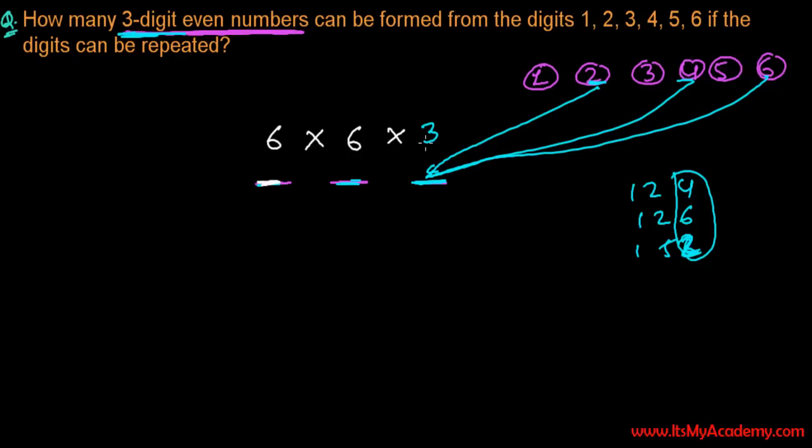Altogether, 6 times 6 is 36, and 36 times 3 is 108. So there are 108 numbers that can be formed if digits are repeated and the given digits are 1, 2, 3, 4, 5, 6.